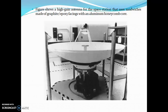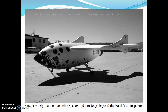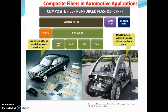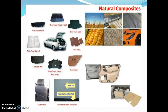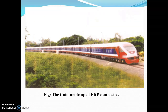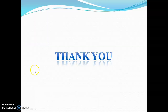This is a space station, and this is the first private manned spaceship. Composites are also used in automobiles, and these are some of the automotive applications. Natural fiber applications are also used, for example in trains made up of fiber composites. Thank you very much.